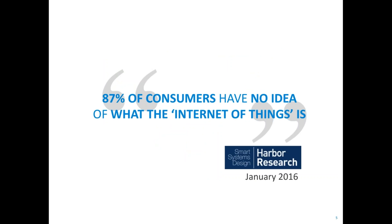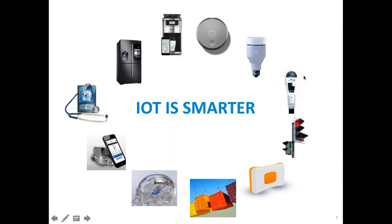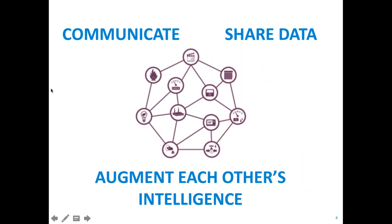According to a recent Harvard research study, the vast majority of consumers today still have no idea what the Internet of Things is. For many, it's still the old vision set in the 1960s by the Jetsons — gadgets everywhere that had to be activated by humans with buttons. But these devices can already work independently, communicate with each other, share data, and augment each other's intelligence through their interactions.